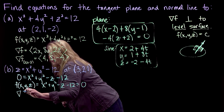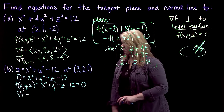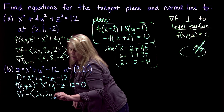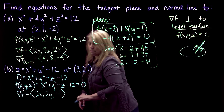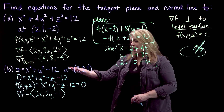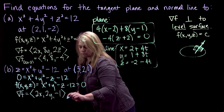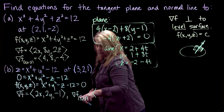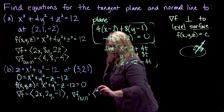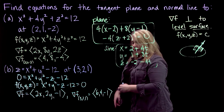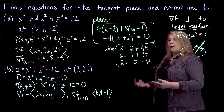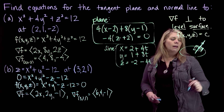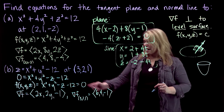Notice the gradient vector is the same whether you keep 12 on one side or the other. The gradient of f is (2x, 2y, −1), since the partial derivative with respect to z is −1. Evaluating at the point (3, 2, 1) gives the gradient vector (6, 4, −1). This surface is a paraboloid, and we're finding the tangent plane and normal line at that specific point.